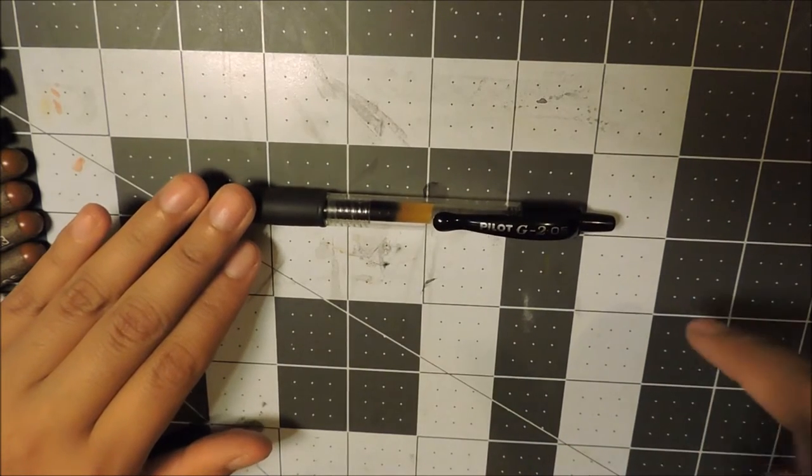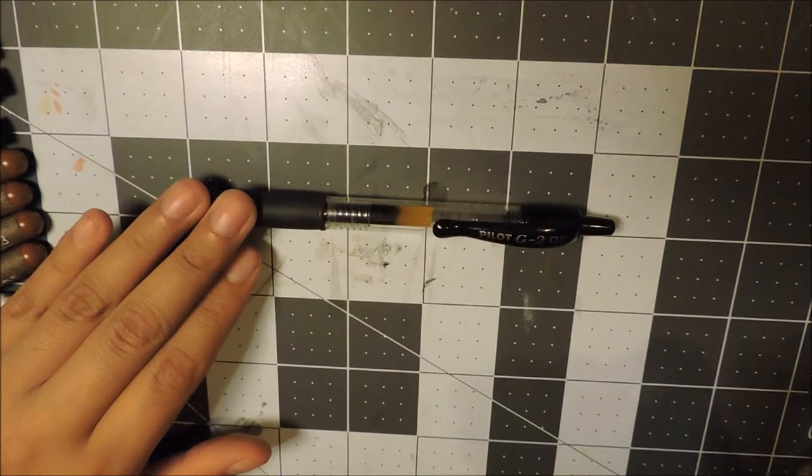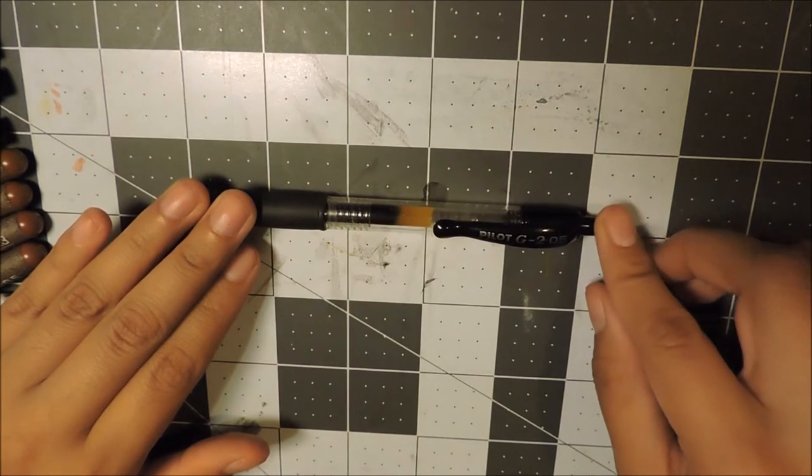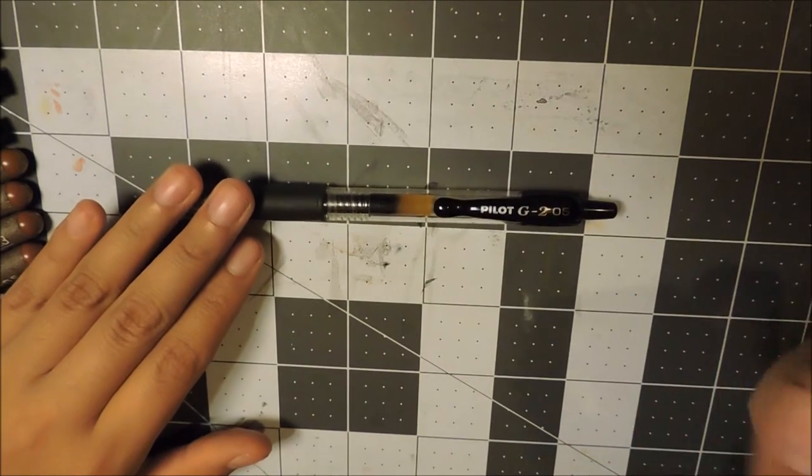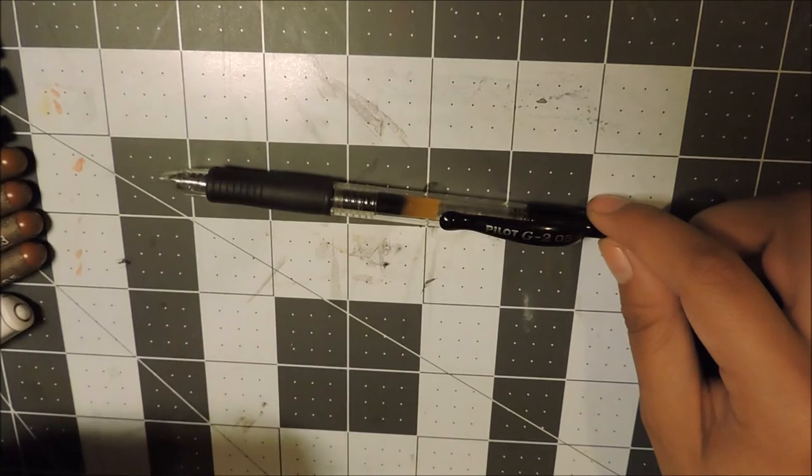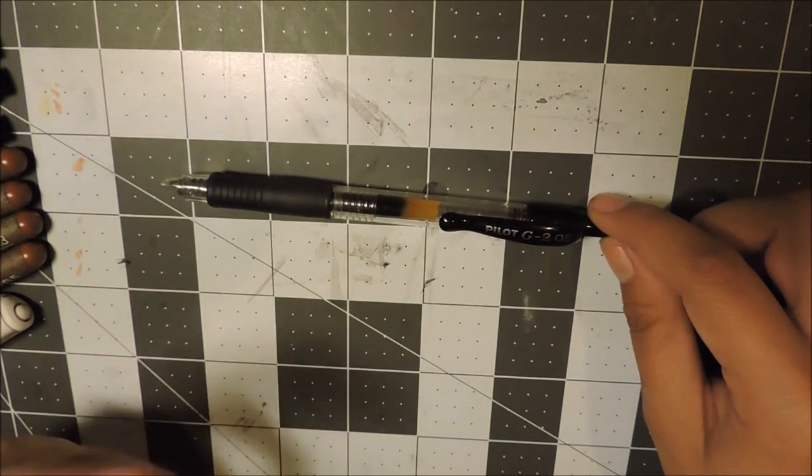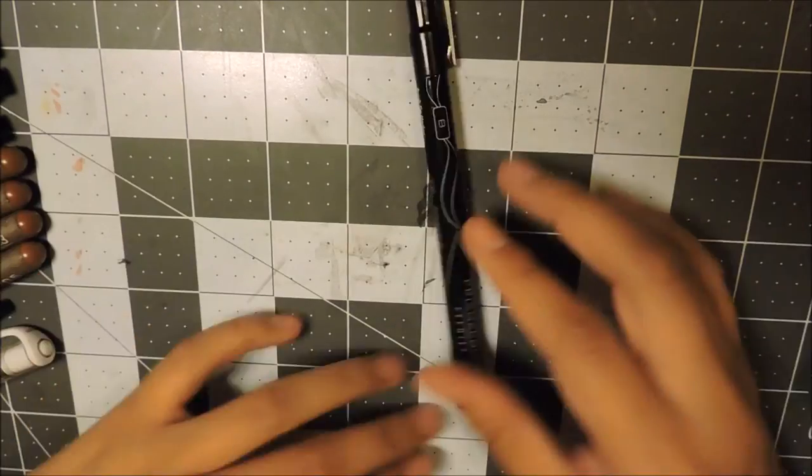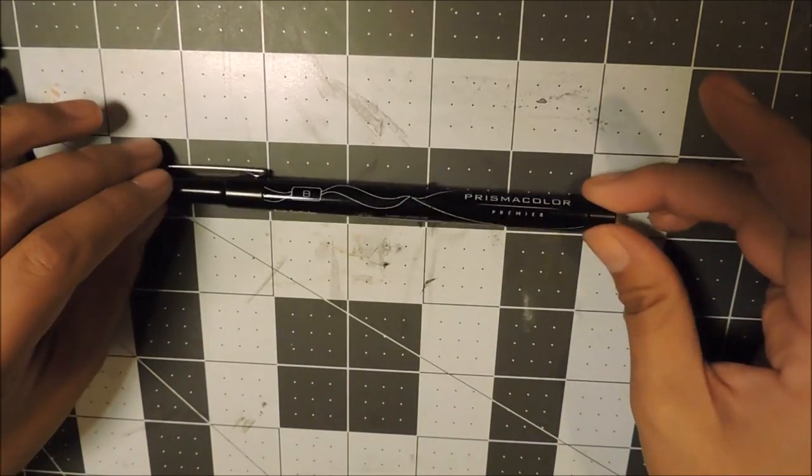An example of this is the Finish This Drawing challenge where the paper was super thin. The Microns and the Copic multiliners would bleed through the paper, so this is my go-to in the 05.